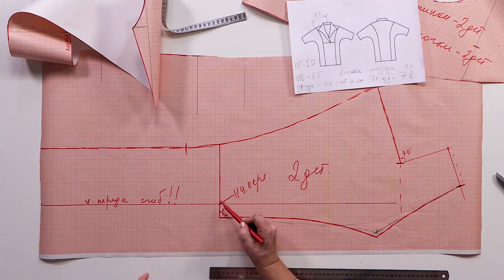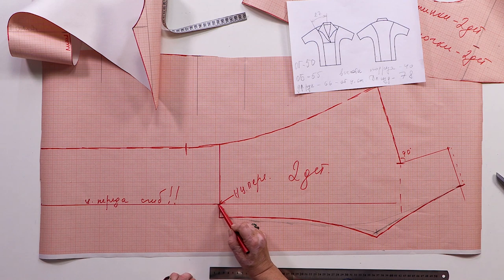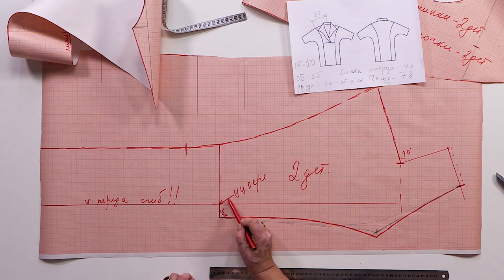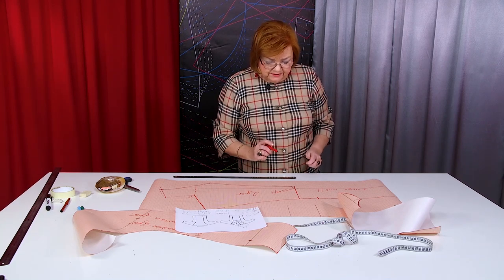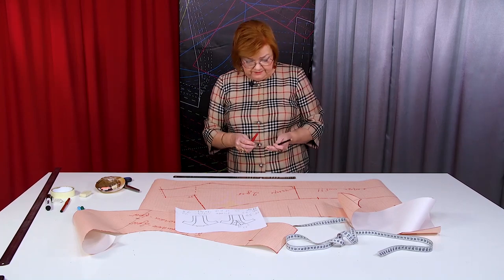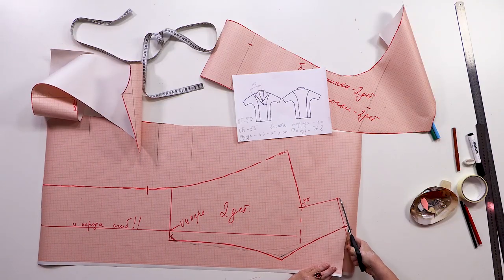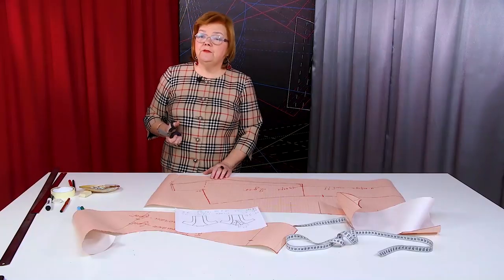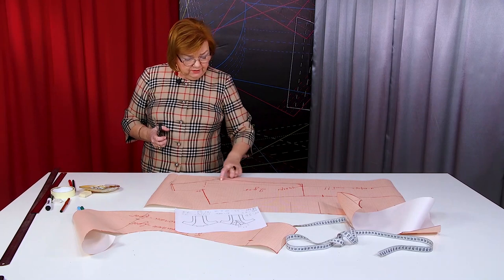This is the check point. I will have to make a notch here. And then, I will need to make the notches match. If you think that the collar is too big, you can make it smaller after your fitting. There is nothing complicated about it.